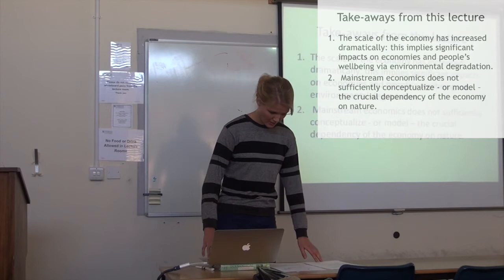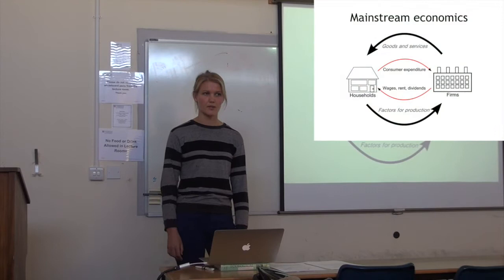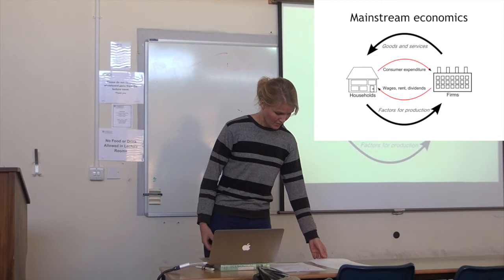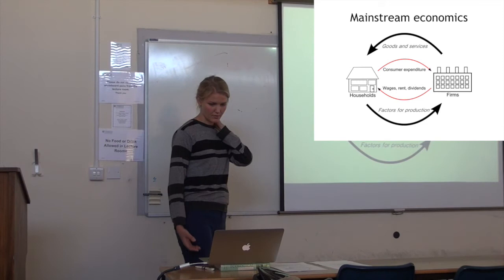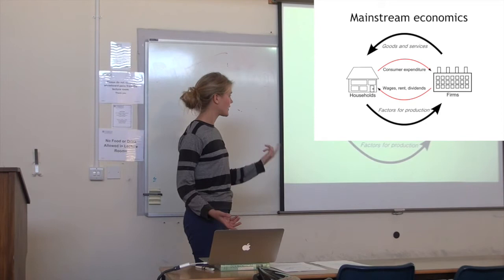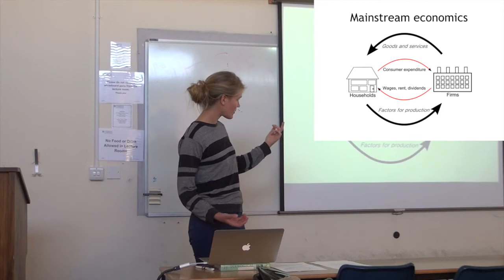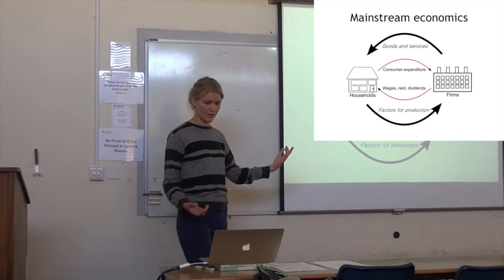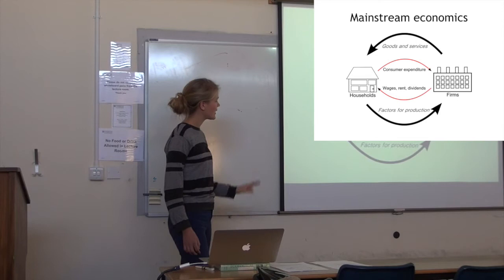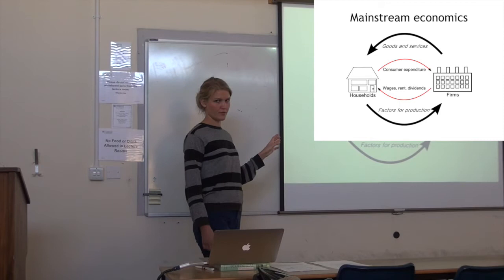So the problems in environmental economics are larger than the problems of mainstream economies in general. One of the famous pictures or conceptualizations in mainstream economics is this circular flow of goods and services and factors of production between households and firms, shown with the physical quantities on one hand and the money flows on the other. This picture is basically a closed system in which everything that goes from one part to the other comes back in a different form from the other part to the first part.